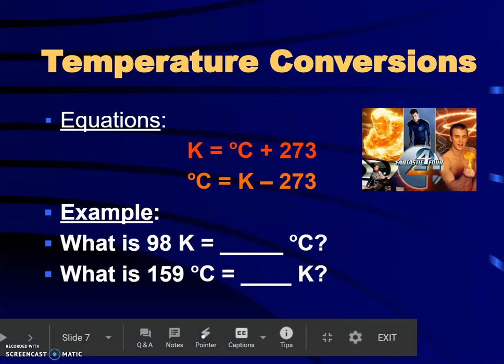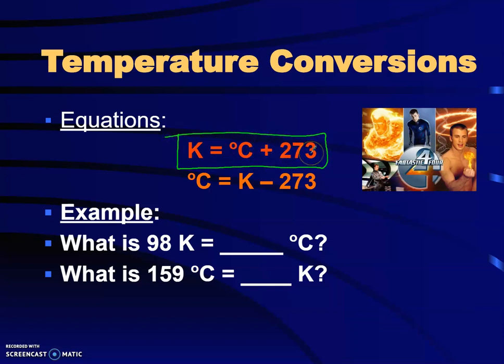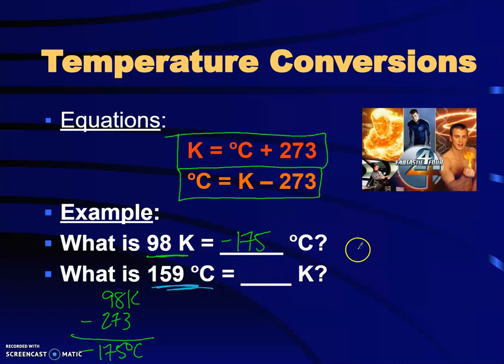Now, when it comes to Kelvin temperatures, the two conversions that we went over earlier in the year are you are adding 273 to your Celsius temperature, and if you are in Celsius and need to get out of, or if you're in Kelvin and need to get out of Kelvin into Celsius, you subtract the 273. So what is 98 Kelvin in degrees Celsius? Well, if I want degrees Celsius, I take this 98 Kelvin, and I subtract 273 in my calculator, and what I get is negative 175 degrees Celsius. That's really cold. What do I get if I am at 159 degrees Celsius, and I want to get the Kelvin? 159 Celsius plus 273 is going to give me 432 Kelvin.